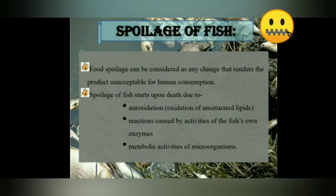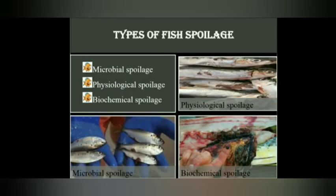Spoilage of fish is one of the key topics under fish contamination. Food spoilage refers to any number of changes in the product that make it unfit for consumption. Spoilage of fish starts upon death due to auto-oxidation, reactions by the fish's own enzymes, and the metabolic activities of microorganisms. Types of fish spoilage include microbial spoilage, physiological spoilage, and biochemical spoilage.